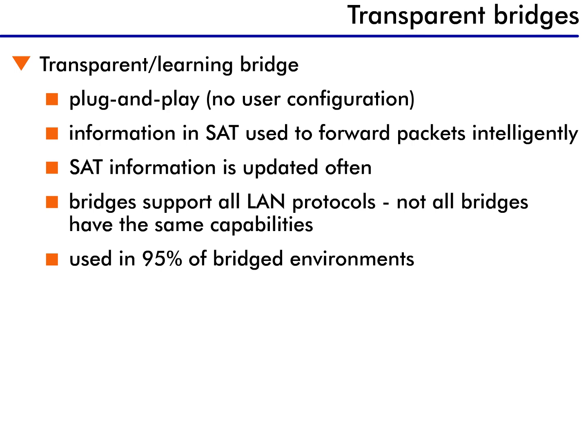The transparent bridge is used in 95% of all bridging environments. The other type of bridging, source route bridging, is far less common. It's only found in token ring networks, and in fact, even though source route bridging was developed for token ring, most token ring networks today have migrated to transparent bridging.